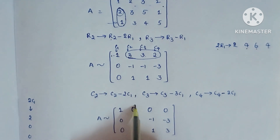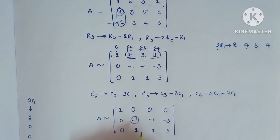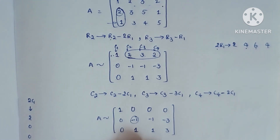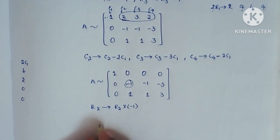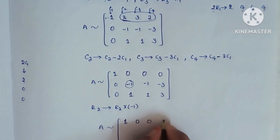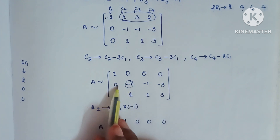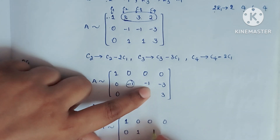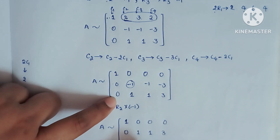Now we have converted the first row and first column elements to 0. We need to convert the pivot element in row 2 into 1. We multiply row 2 by −1, so R2 → R2 × (−1). This gives us: 0×(−1)=0, (−1)×(−1)=+1, (−1)×(−1)=+1, (−3)×(−1)=+3.